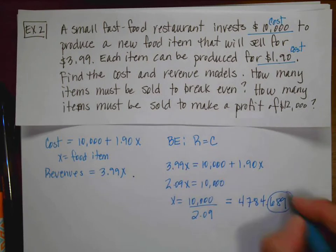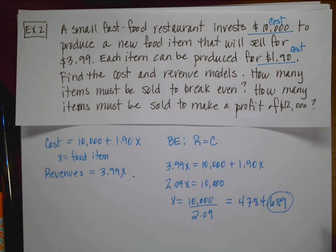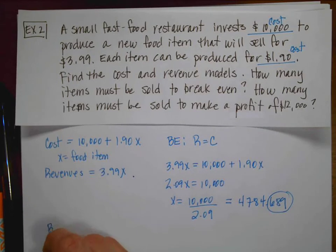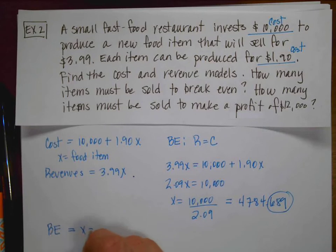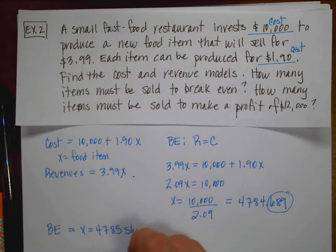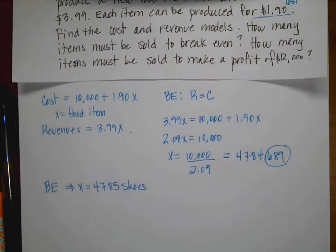it says how many items must be sold to break even. That's kind of weird, 0.689 of a food item. And so I would say that the break even is going to happen when X is equal to 4785 food items. Okay. And I'll put that kind of arrow there.